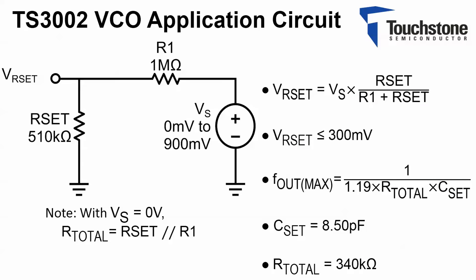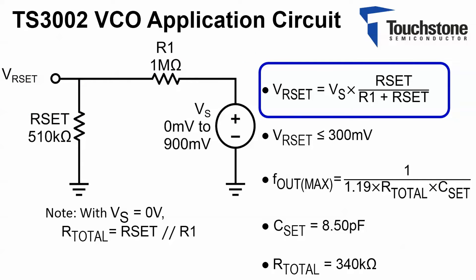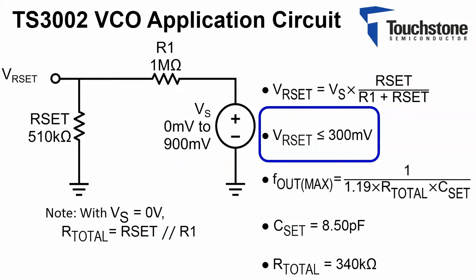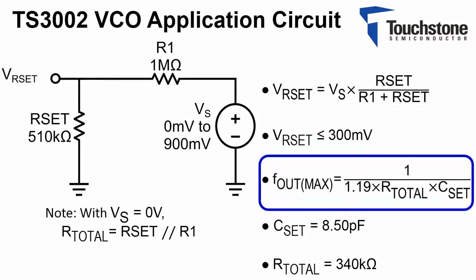Here we have the voltage divider as seen by the RSET pin. The voltage divider equation defined by the circuit components is highlighted. Please note, due to the internal circuitry of the TS3002 timer, the applied voltage at the RSET pin must not exceed 300 millivolts.